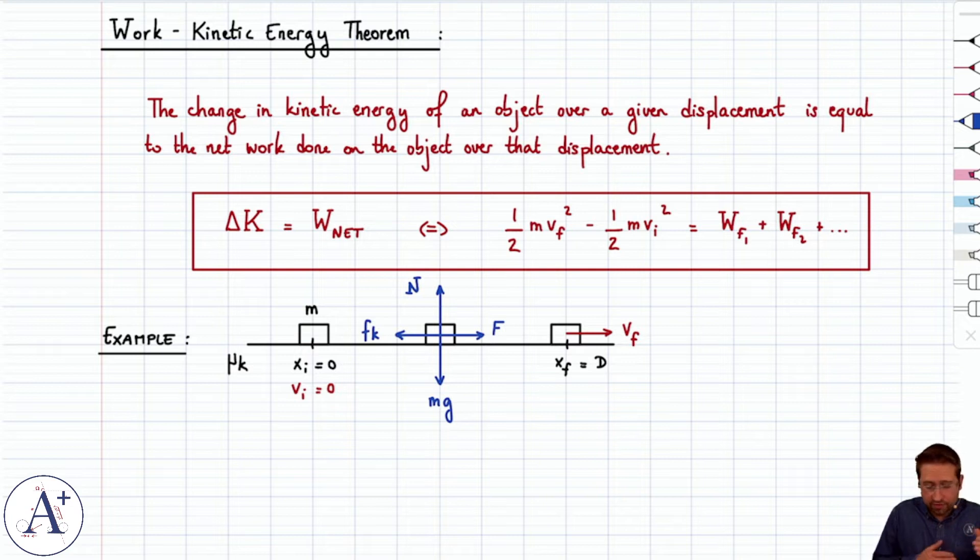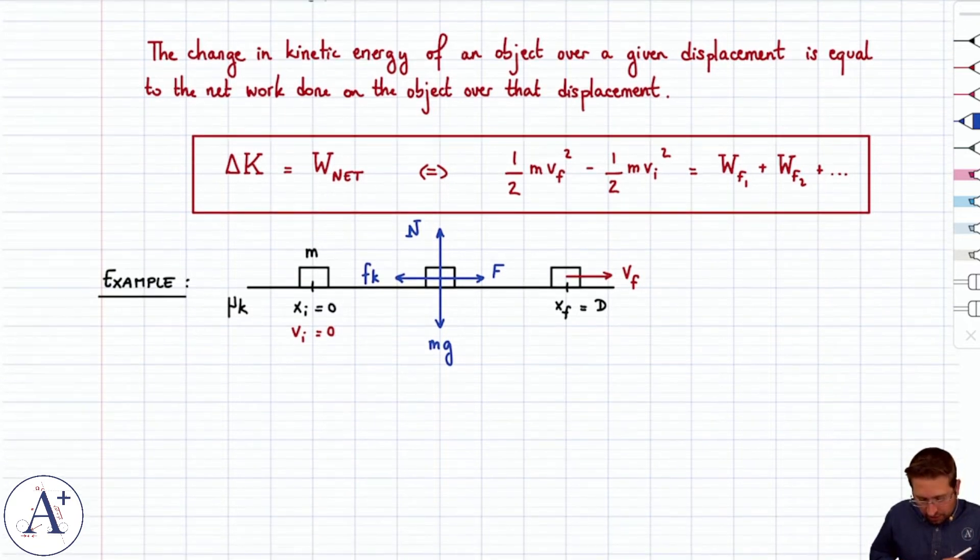So, if you move on a flat horizontal surface, then Fk will always be going to the left if you're moving to the right, and the normal force will be constant and therefore Fk will be constant, which makes things pretty nice to figure out.